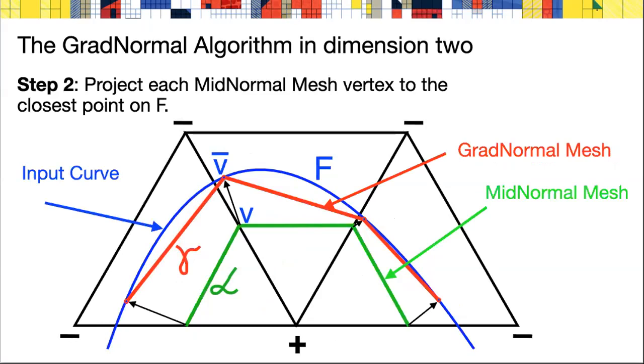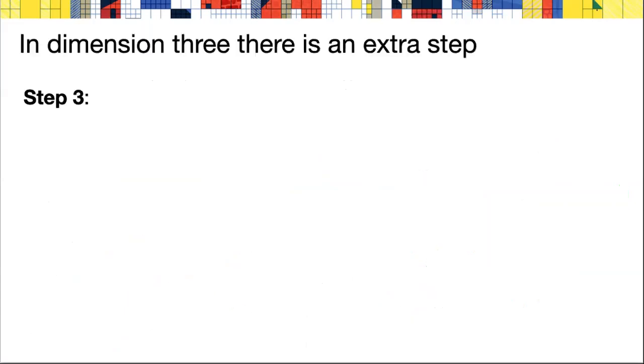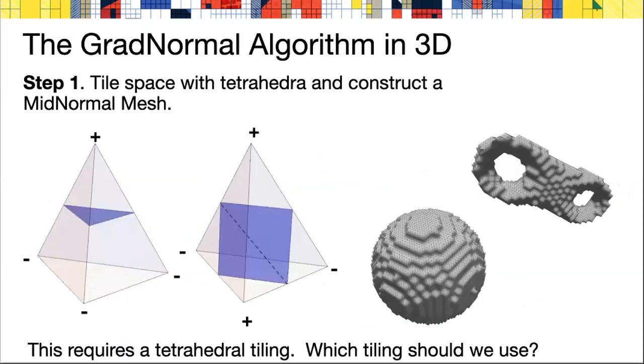The GradNormal mesh will have vertices lying on the curve F, but not on the edges of the triangulation. Here side by side are the marching tetrahedra and the GradNormal meshes in dimension two. In dimension three, there's going to be an extra step, which I'll leave to discuss very shortly.